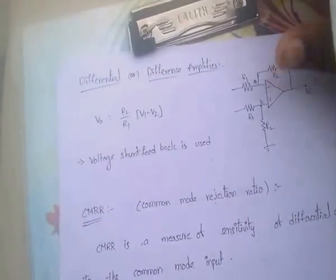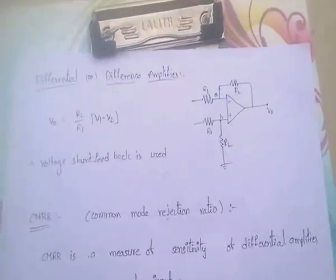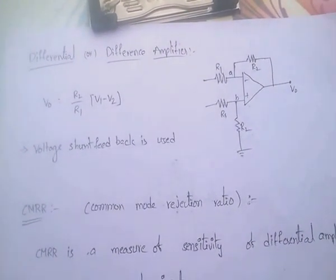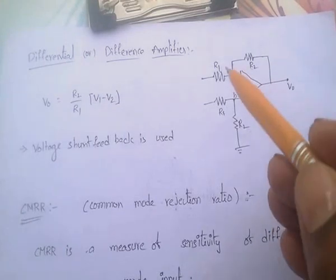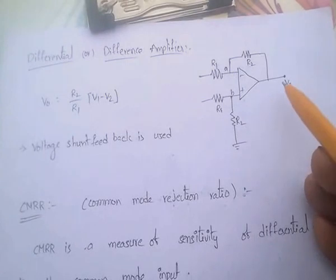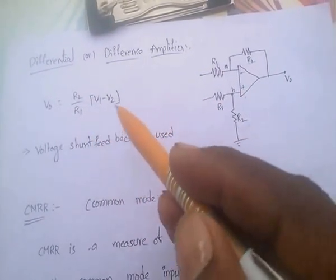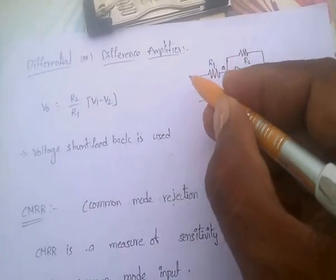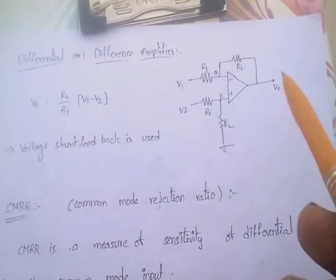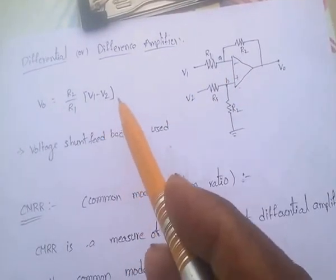And next important one: differential or difference amplifier. Here, this is R1, this is also R1, here it is R2, it is also R2. The output V0 equals R2 by R1 into V1 minus V2.